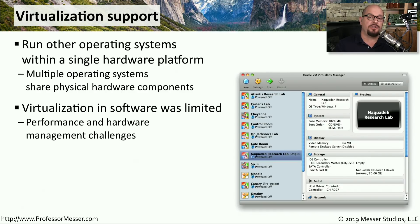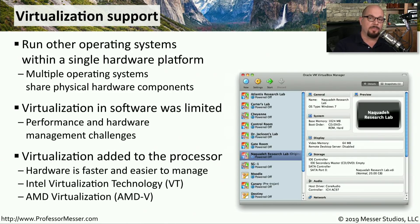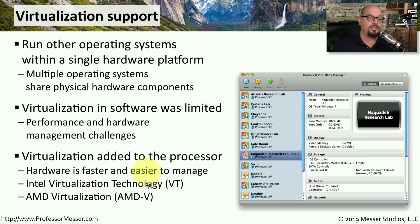But as virtualization evolved, we needed faster and more efficient ways to handle the separations between virtual machines. So now inside of our processors we have specialized hardware focused on making virtualization more efficient and easier to manage. If you're using an Intel processor, this hardware is called Intel's Virtualization Technology, or VT. And if you're using an AMD processor, AMD calls this AMD Virtualization, or simply AMD-V.